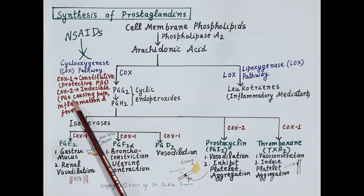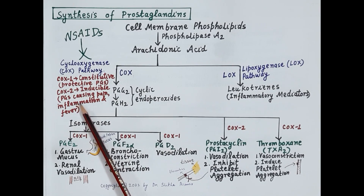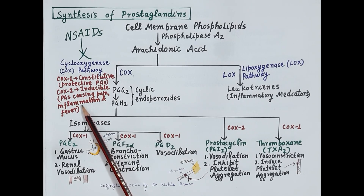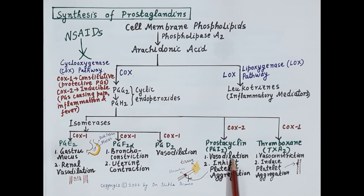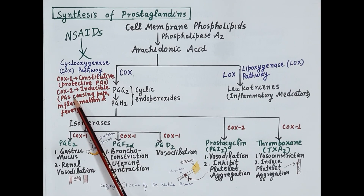COX-2-derived prostaglandins cause inflammation, pain, and fever and are produced only during inflammation and tissue injury. However, COX-2 also plays physiologically important roles in organs like the brain and kidney, and it also stimulates platelets to produce prostacyclin, which is an important protective function of COX-2.